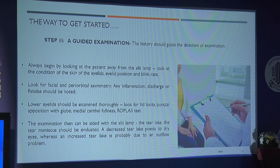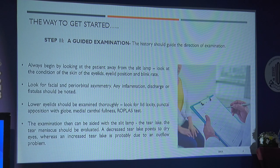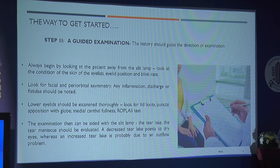The lower eyelids have to be examined thoroughly. In most cases — especially older patients — you'll find lid laxity, abnormal position relative to the globe, and medial canthus fullness. We should perform the regurgitation test. We should also evaluate the tear meniscus. A decreased tear meniscus height points to dry eye, whereas an increased tear meniscus is probably due to an outflow problem.